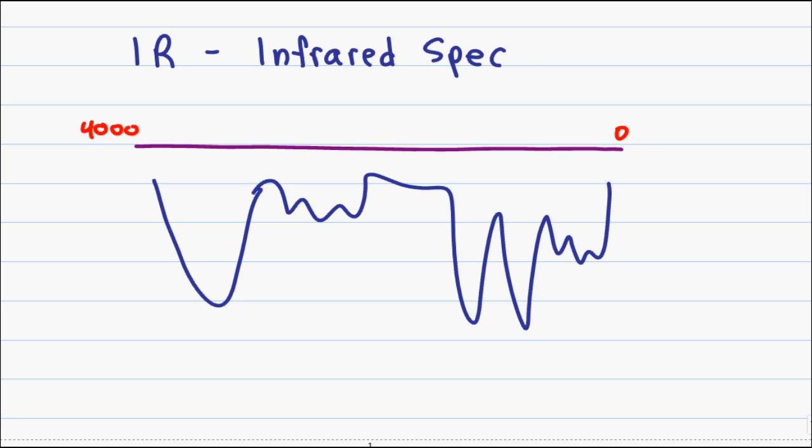Unlike NMR, with IR you cannot look at the graph and definitively say this applies to this specific group or this specific molecule. However, if you are given IR in a problem, this is very useful for identifying functional groups.